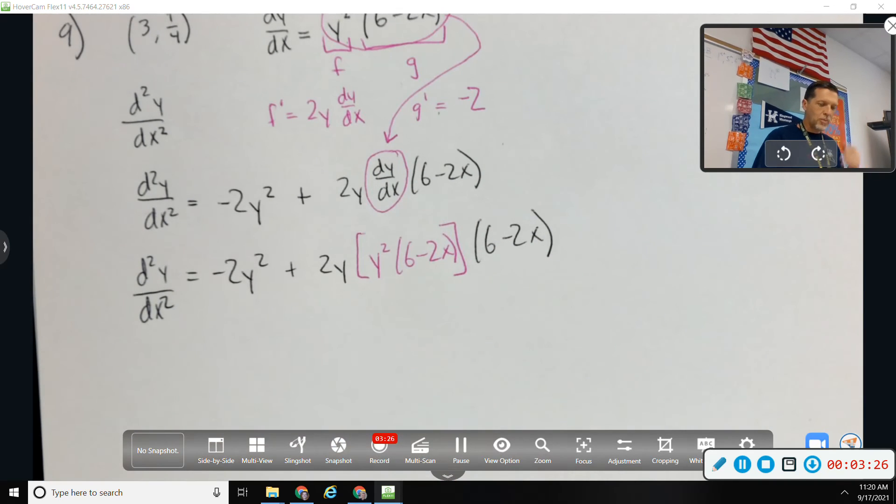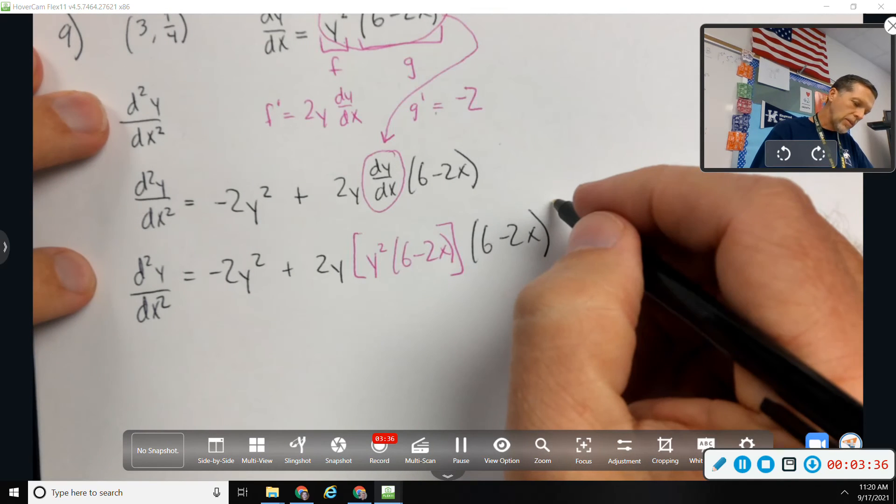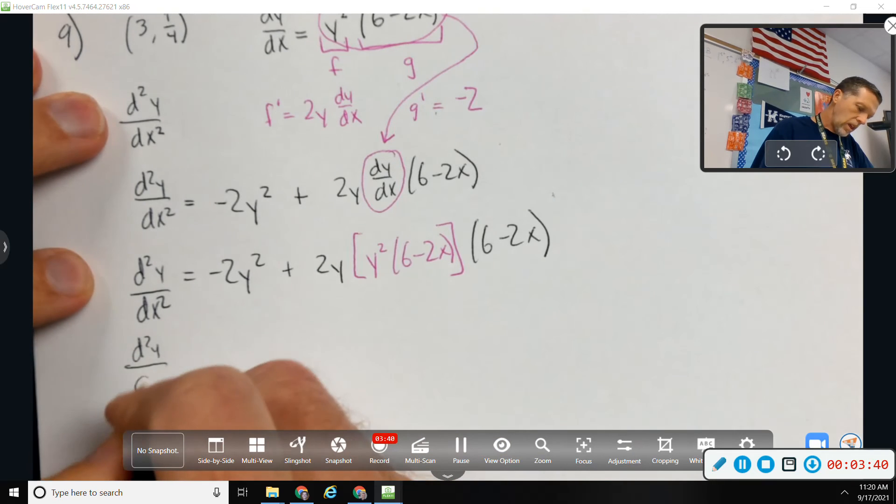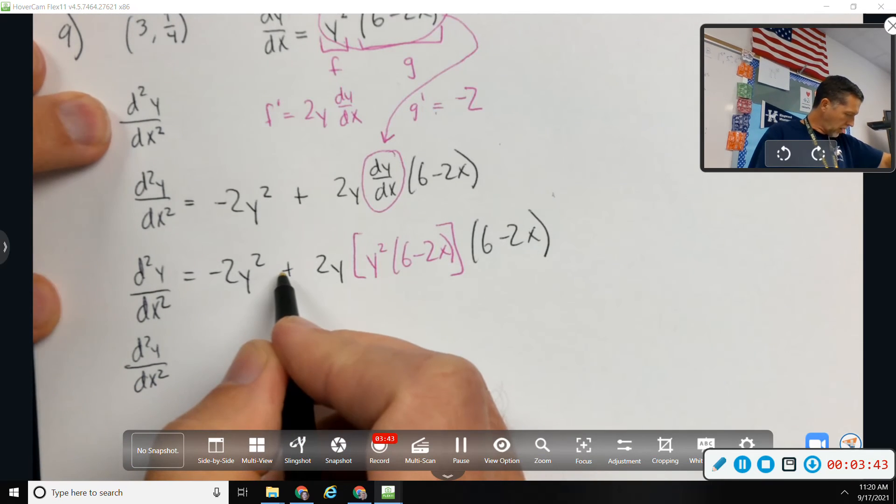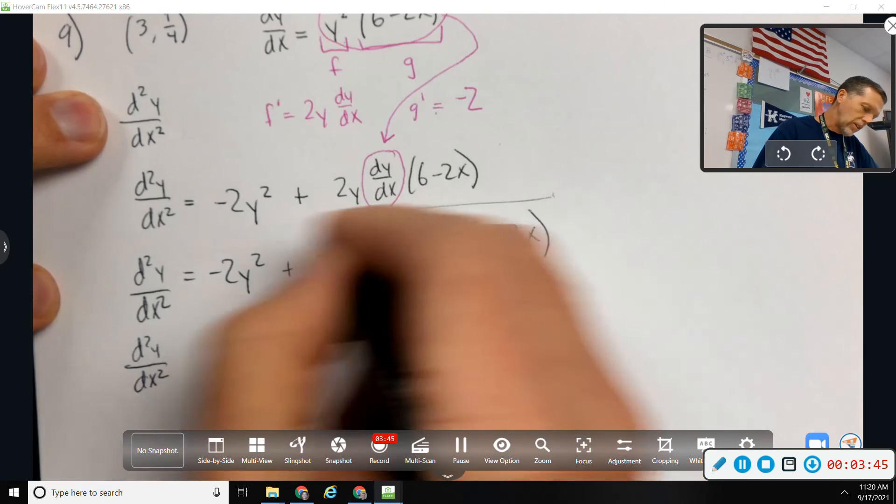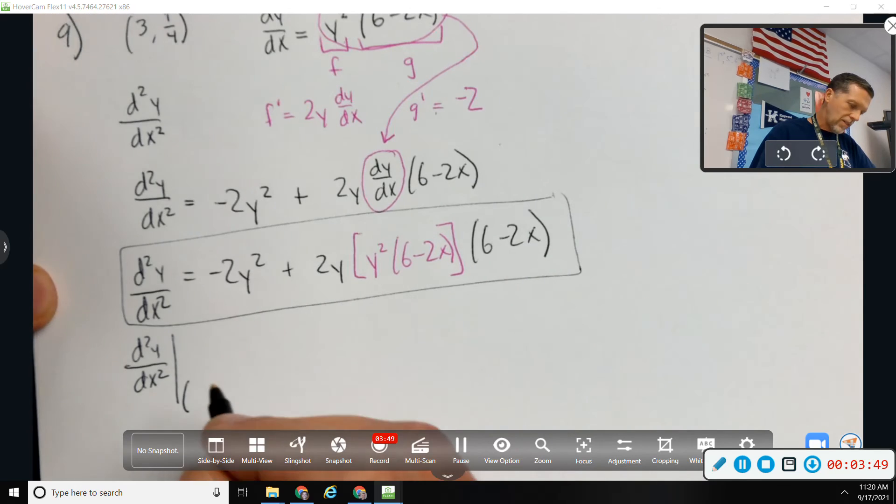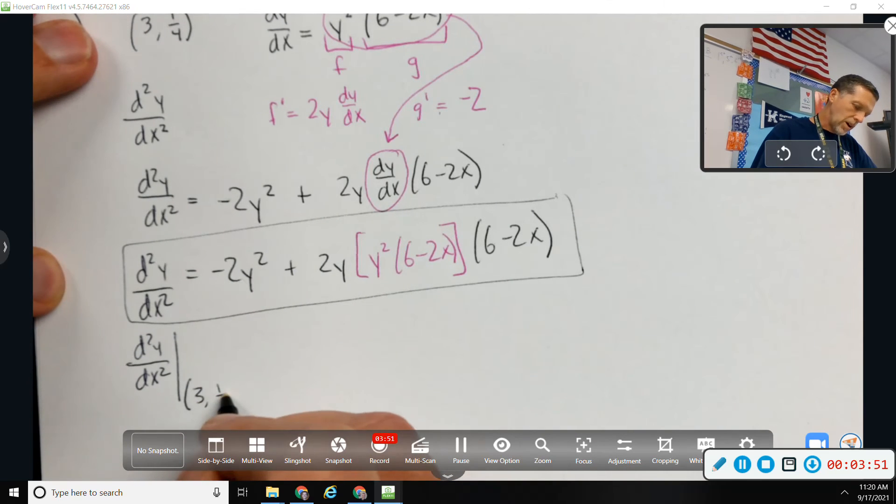And I guess there's probably some cleanup you could do on there. Factor out stuff, multiply, but we don't really want to do that. We just leave it alone. Although it did say evaluate it at the point. I'm leaving that there, because that was one of the questions, is find this. So there's one answer. And then evaluate it at 3 comma 1 fourth.